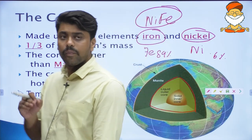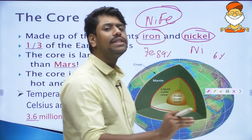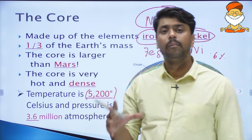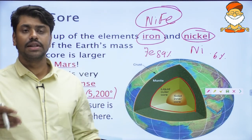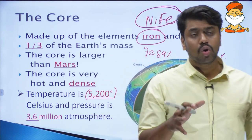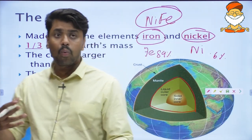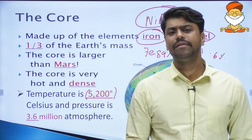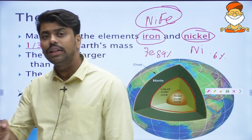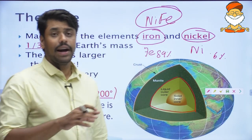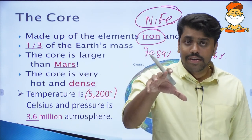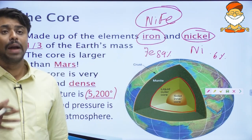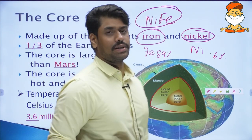The inner core is solid and the outer core is molten. The core has almost one third of the Earth's mass — even though it is very small in size, it is very heavy due to the extreme pressure. In fact, even though the core is small, it is actually larger than the planet Mars.